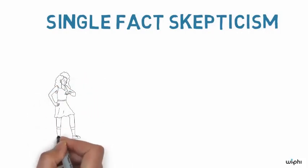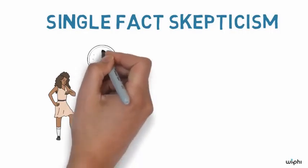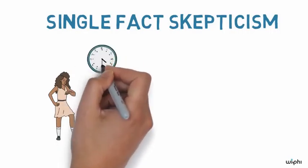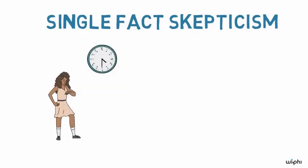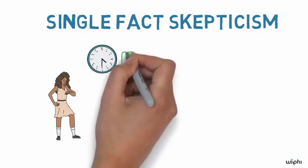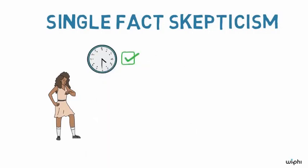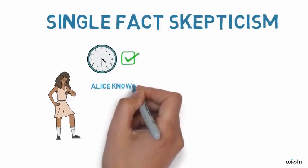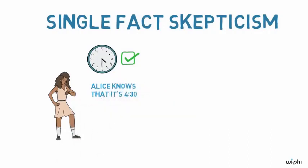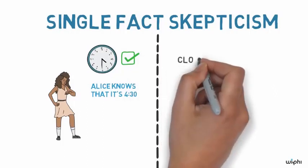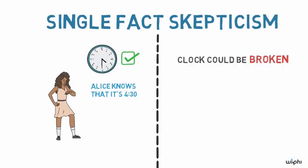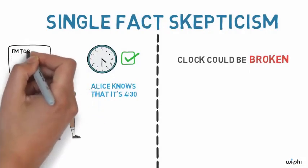Consider Alice, who's walking down the street and wondering what time it is. She glances up at the clock and sees that the hands show 4:30. Suppose that's right and the clock is working fine. Ordinarily, we'd say, now Alice knows that it's 4:30. But if we highlight something that could have gone wrong, sometimes clocks are broken and Alice didn't look long enough to be sure that the hands were moving.